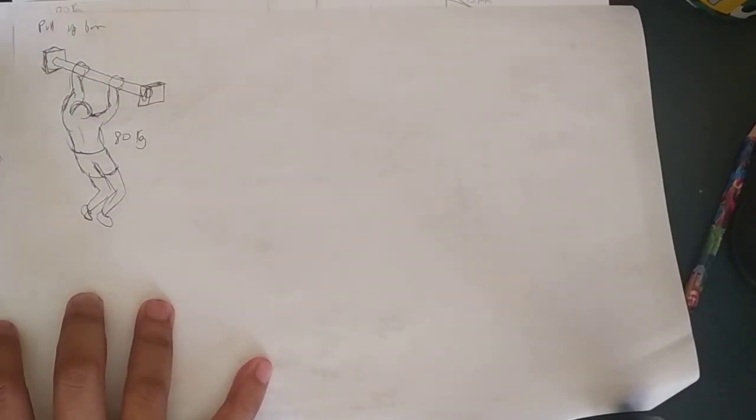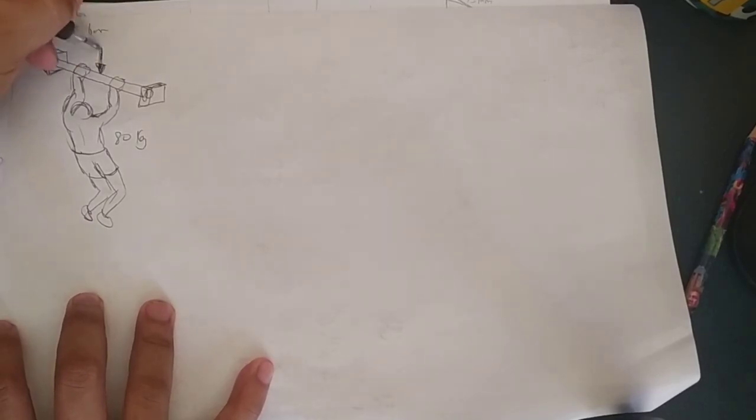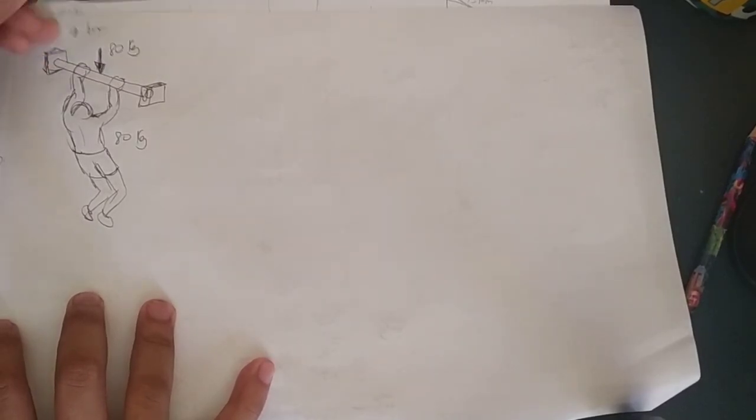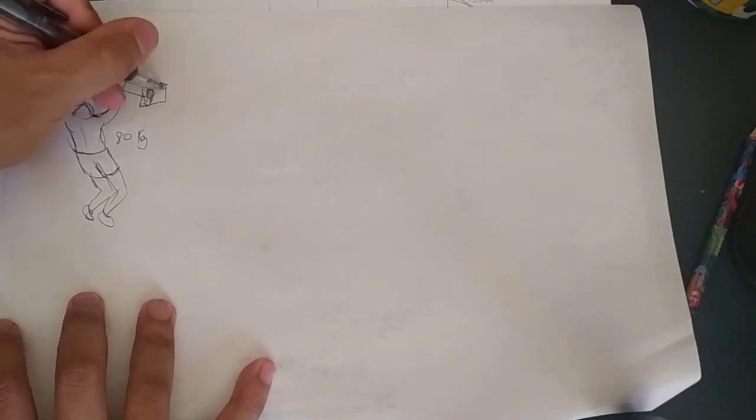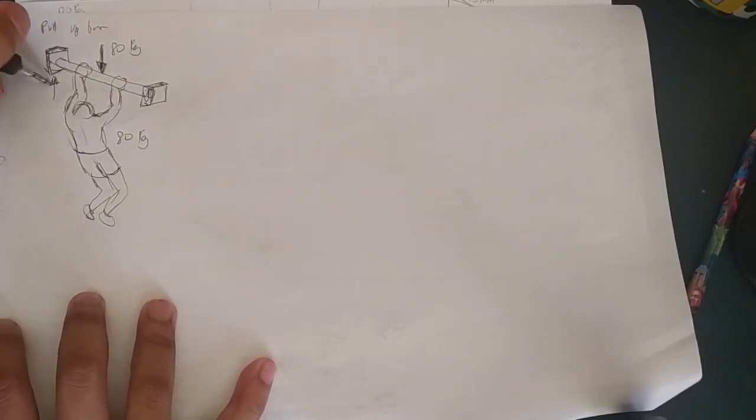Now assuming the bar is rigid, that means the load will be transferred on the two brackets. So we assume that the 80 kilogram will be simply divided into two between the two brackets, so that's 40 kilogram each.